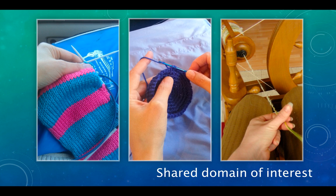These communities of practice have three main characteristics. The first is a shared domain of interest. Ravelry's domain is knitting, crocheting, and for those who are really hardcore, spinning their own yarn.